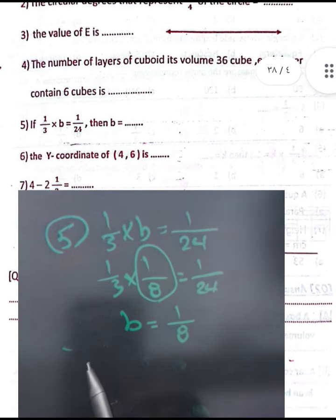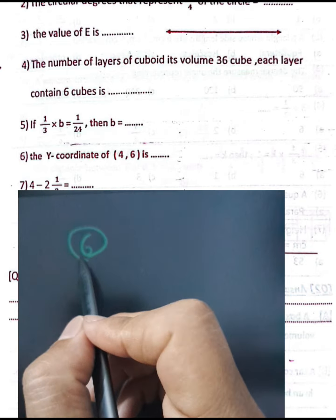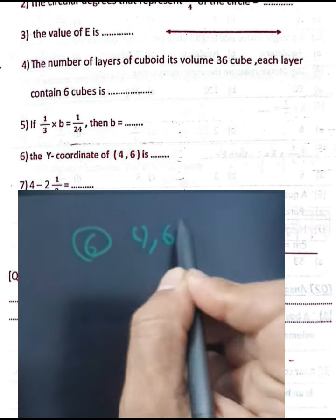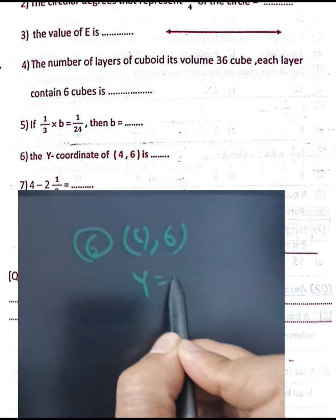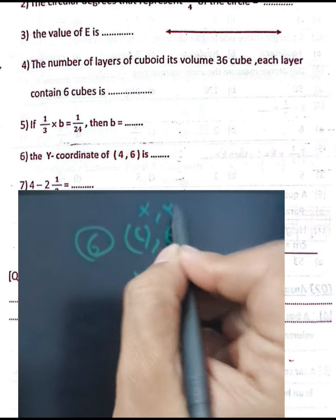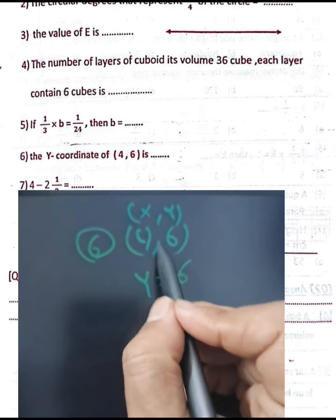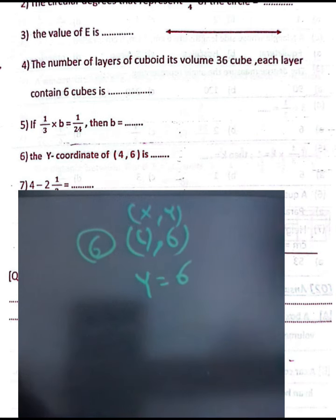Question number six: find the y-coordinate of the point (4, 6). We have x and y coordinates. The second value is the y-coordinate, so the y-coordinate equals 6.